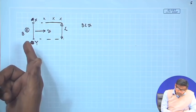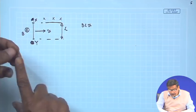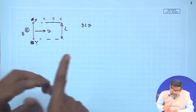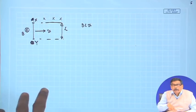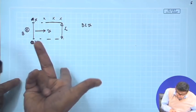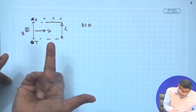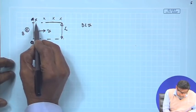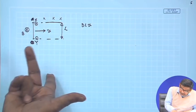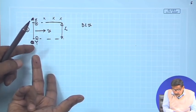Now the question is: what should be the polarity of this voltage? If you apply your right hand rule — the forefinger always denotes B, the thumb denotes velocity, and then the tip of the middle finger gives you the plus sign of the voltage induced. Here B is into the plane of the paper, V is this way, so the polarity of the induced voltage: the tip gives plus, the other end is minus.